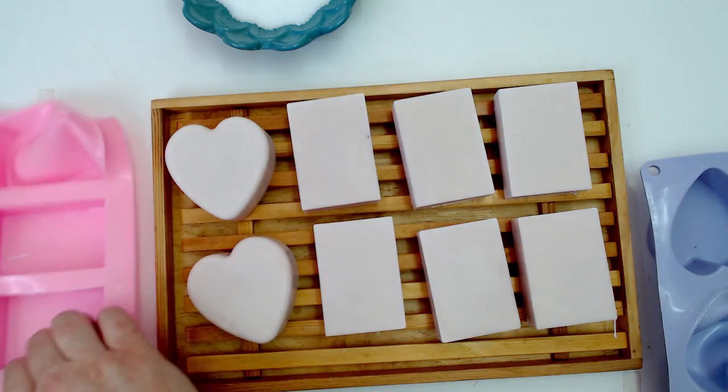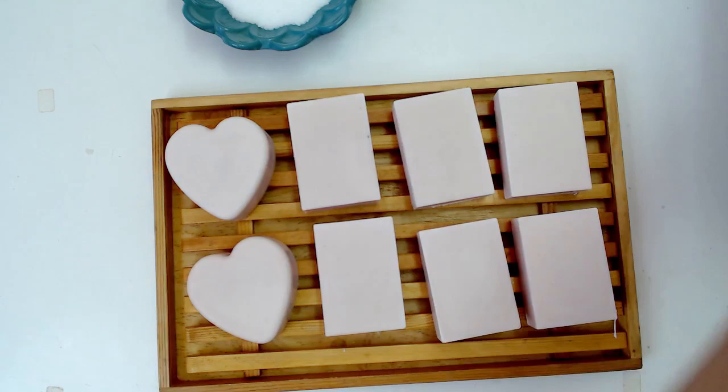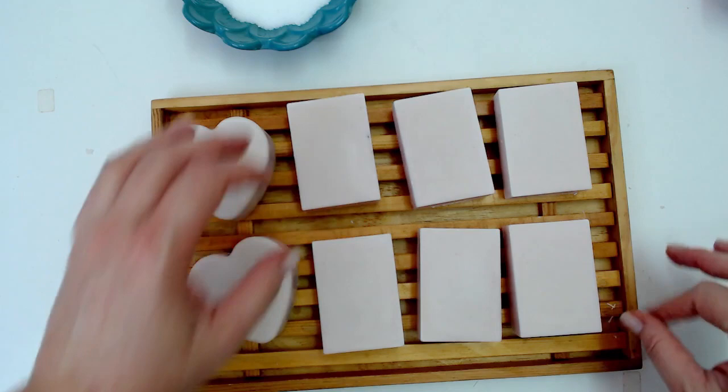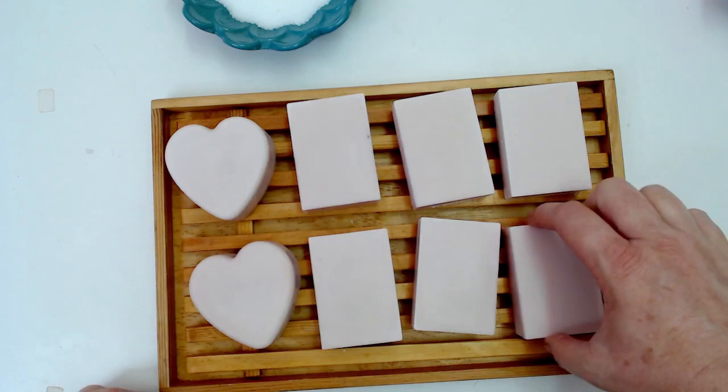And that's all that there is to it. So if you've got hard water or if you've got minerals and metals and stuff in your water and your soap is making soap scum you can do this. And if you've struggled with DOS, those dreaded orange spots, then you can use citric acid as well to help counteract that. So happy soaping until next time.